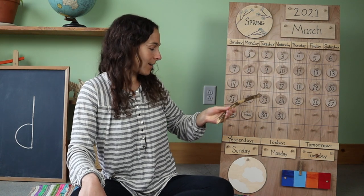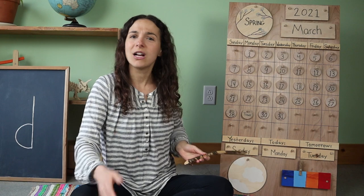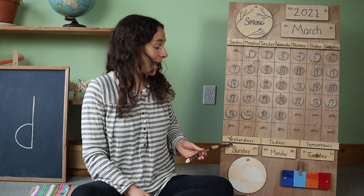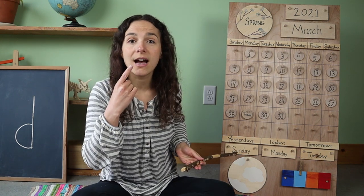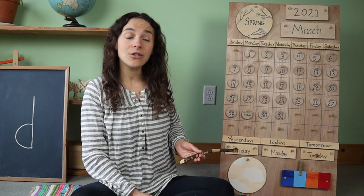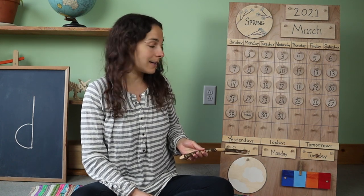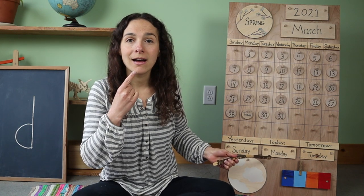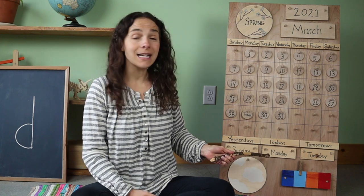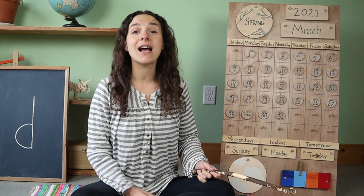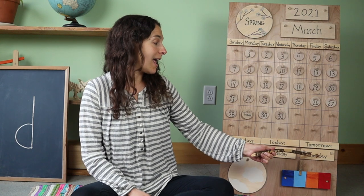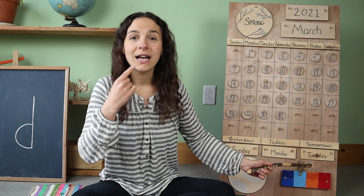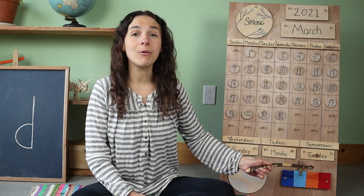Let's travel back down to the bottom of the chart. Do you remember what the day was yesterday? Here's your clue: yesterday was Sunday, the last day of the weekend. So that means that today is Monday, the first day of the week day. And if today is Monday, that means that tomorrow will be Tuesday.